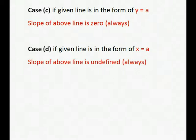Now fourth subcase (d): if we have given a line in the form of x equals a, this is the equation of vertical line and in this case slope is undefined.